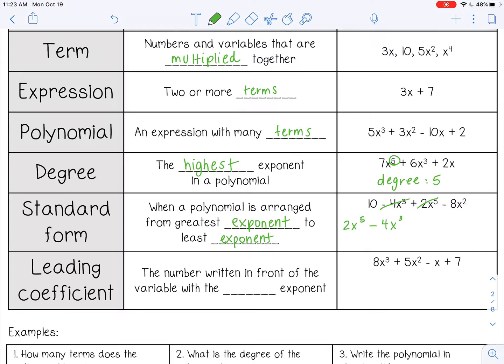And then 2 is our next largest exponent, so negative 8x squared, so minus 8x squared. And then last, you write any constants. So we have a positive 10, so I'm going to write plus 10. So that is standard form for that polynomial.